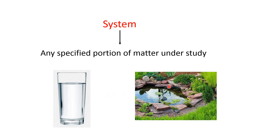Let's see another example. This is a pond. We are examining only the water of this pond — water pollutants present in this water, heavy metals present in this water, organisms present in this water. Only this water of the pond is our system. You see, a system may be as simple as water in a glass, or it may be as complicated as the water of a pond.